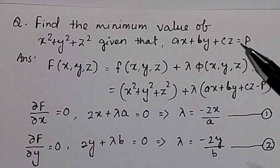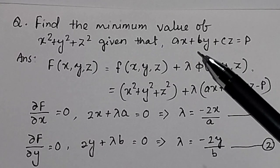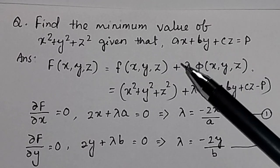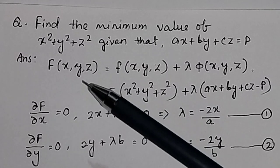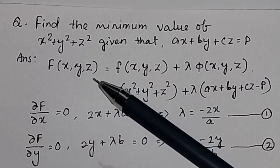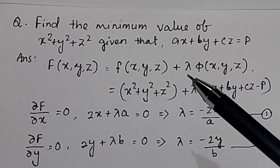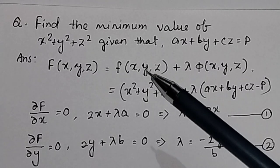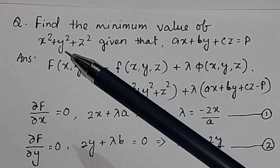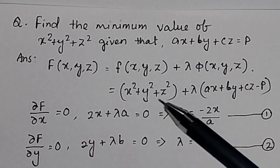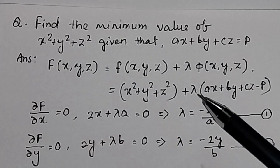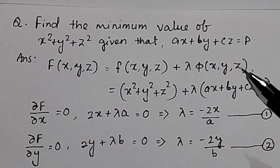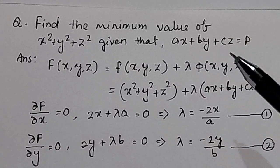This is the constraint condition given, and we can solve it by using constraint maximization using the Lagrange multiplier. The equation for constraint maximization using the Lagrange multiplier is F(x,y,z) = f(x,y,z) + λ·φ(x,y,z), where f(x,y,z) is the objective function x² + y² + z², and φ(x,y,z) is the constraint ax + by + cz = p.